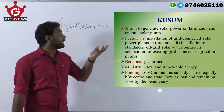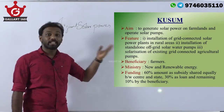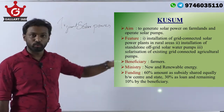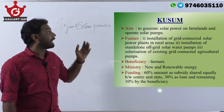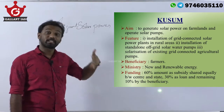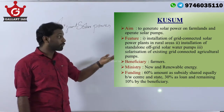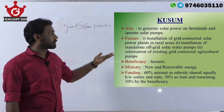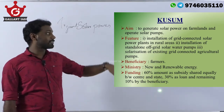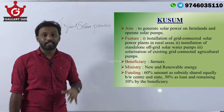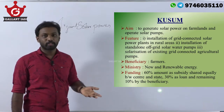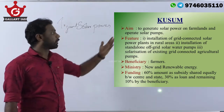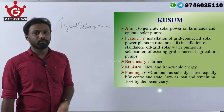The important features are: installation of grid-connected solar power plants in rural areas, installation of standalone off-grid solar water pumps, and solarizing the existing grid-connected agriculture pumps. These are the core motives of the Kusum scheme.